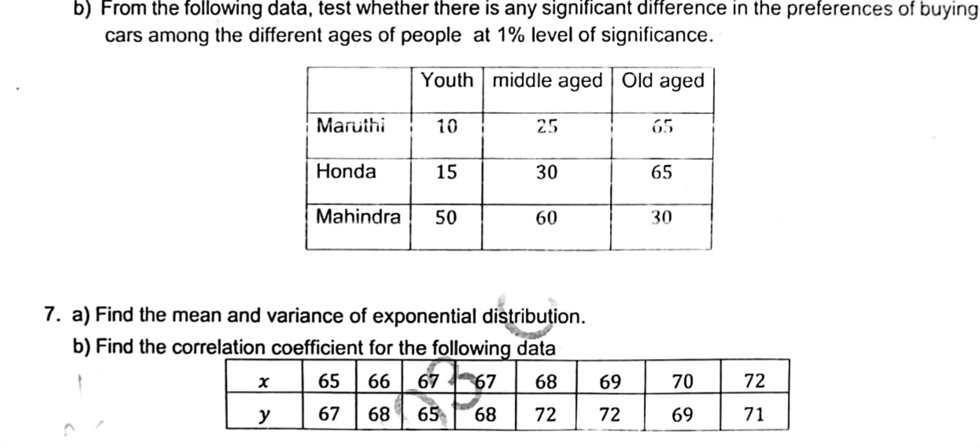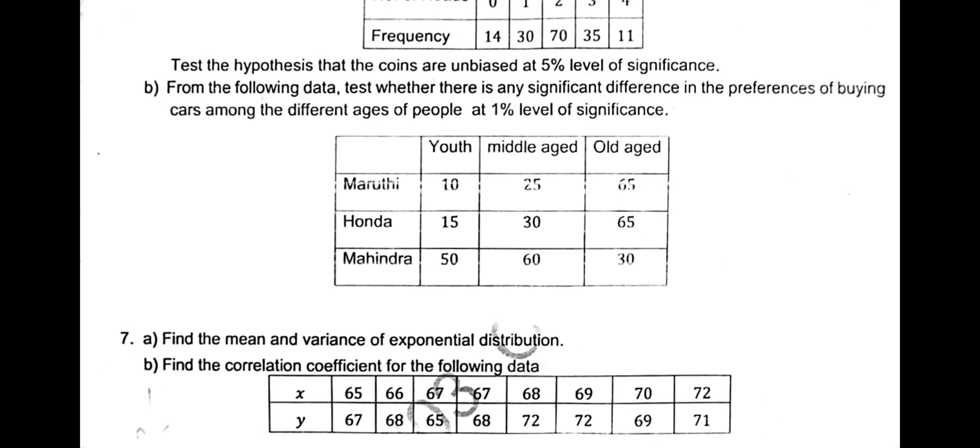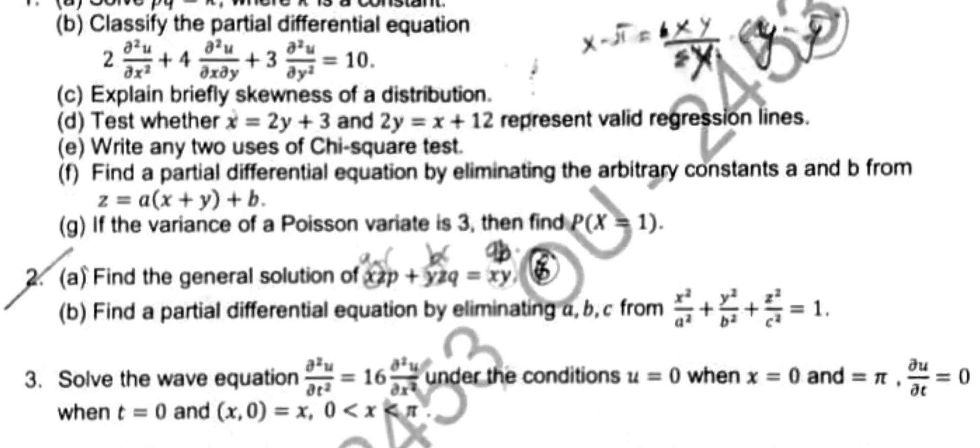Next, sixth main B is independence of attributes - he gave chi-square test independence of attributes. Seventh main A he gave find the mean and variance of exponential distribution. See there he asked normal distribution, here he is asking mean and variance of exponential distribution. Then seventh main B is correlation coefficient. So next, civil paper - civil and mechanical students.